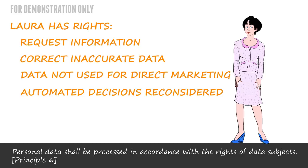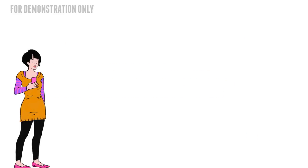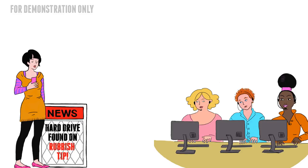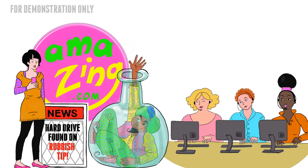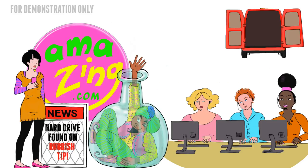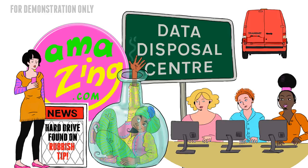If a breach in the data protection principles caused Laura damage or distress, she might be able to claim compensation. There's quite a lot to data protection, and our personal data is important to us. Understanding what you need to do to comply with the legislation, and also how the legislation protects you and those around you, will help to make sure that data is processed fairly and lawfully.